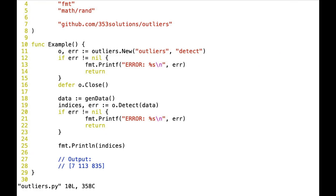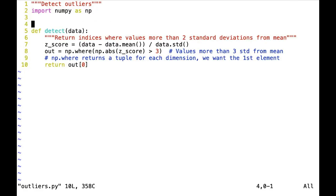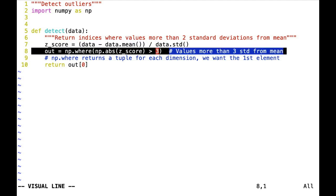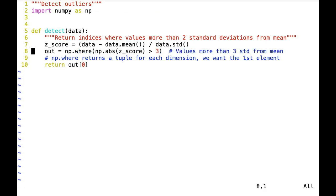If you look at the Python code, it's very short. We calculate the z-score for every element in the array that's coming in, find out where the elements are more than three, and then we return these indices. So this is the example code, the Python code and the Go code that we want to run.